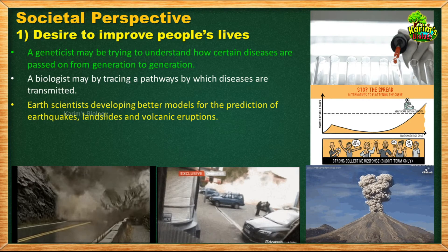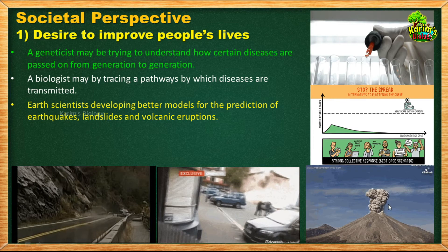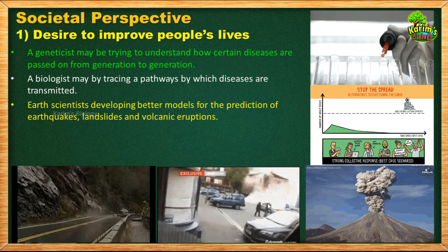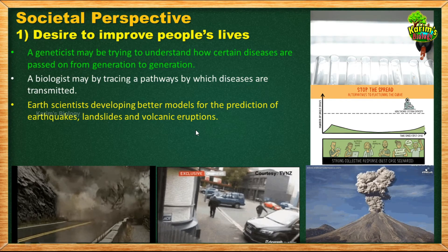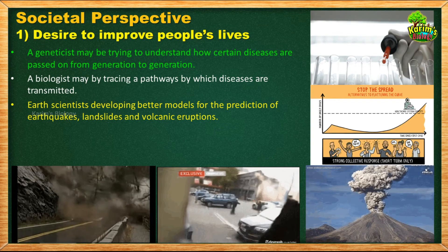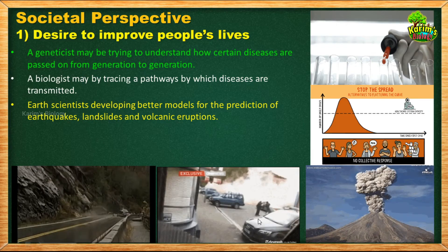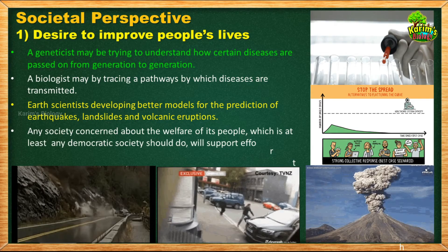You can see here a landslide, an earthquake, and a volcanic eruption — natural disasters which are very hard to predict. Making instruments to predict these disasters earlier requires sophisticated equipment and intense research. Scientists need funding to do that research. When these people work hard and find solutions to the problems we face, the benefit goes to all people in society. That is why it is the responsibility of society to provide money to these scientists, so that any democracy concerned about the welfare of its people will support efforts to better people's lives.